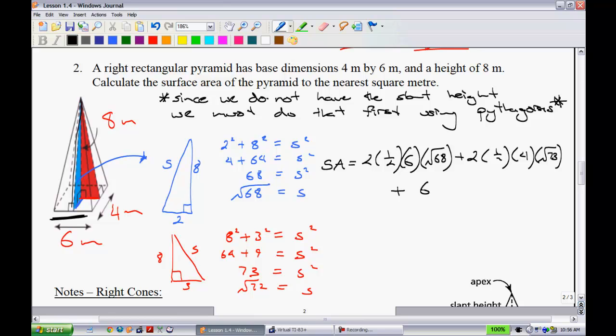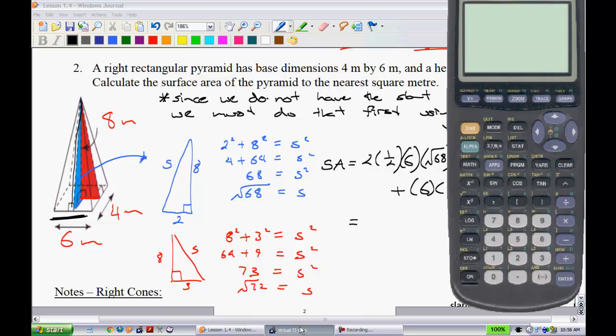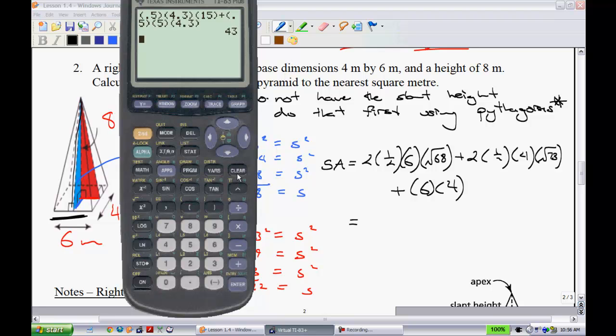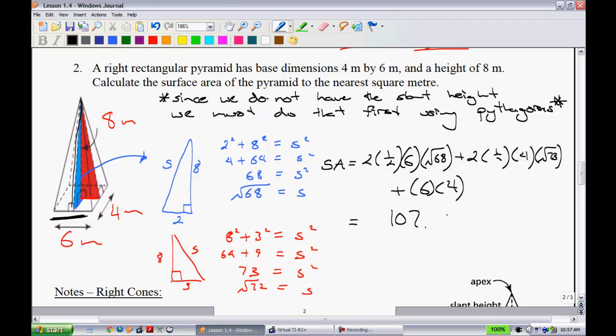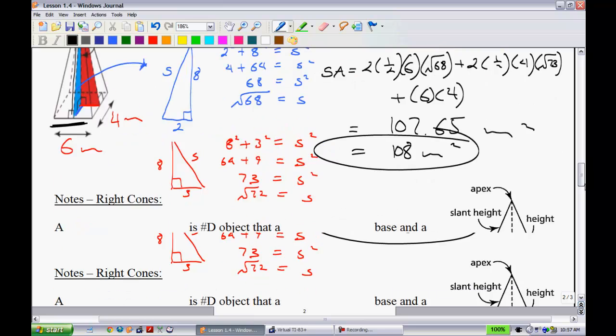And lastly, we have to deal with the base, and the base is 6 times 4. We'll hammer all that into our calculator. We've got lots to do here. Make sure you use brackets appropriately. I'll go 2 times 0.5 times 6 times root 68 plus 2 times 0.5 times 4 times root 73. You don't need to be using brackets here. You could get away with just using the times sign. I better add another bracket just to be careful. And then lastly, the base, which is 6 times 4. And we get 107.65 meters. They asked you to round it to the nearest square meter, so we would round that to 108 meters squared as your final answer. That's a tough question. You may need to ask me about that one in class.